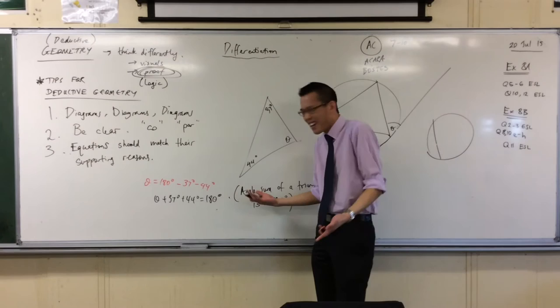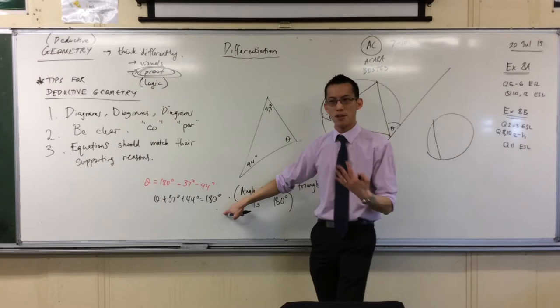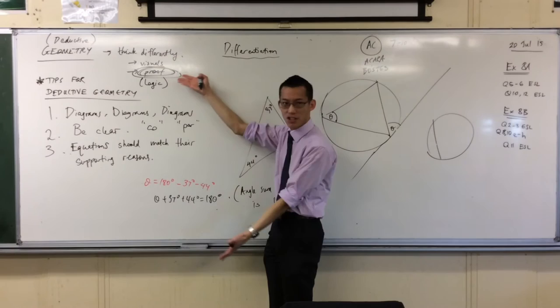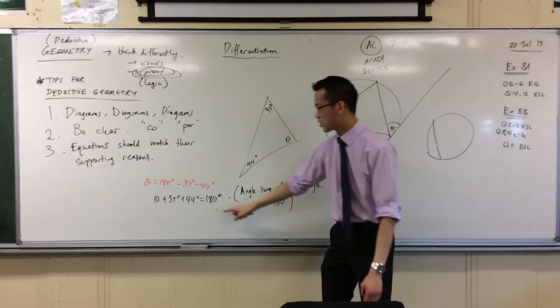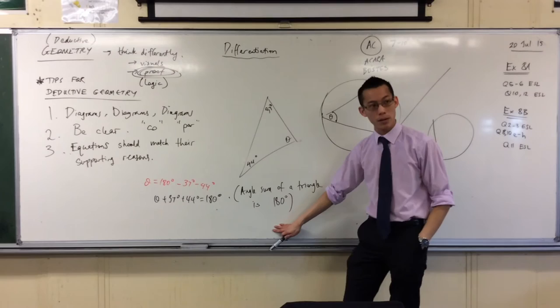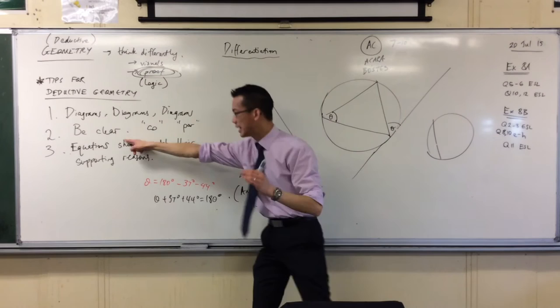Now you're probably not gonna lose a mark for saying this rather than this, but we're not in this just about getting you to memorize some rules so you can reproduce something correctly. I'm trying to get you to understand mathematics and how logic works. When you identify what reason you want, you need to construct this equation so it carefully matches, so that it is clear what you are proving and how. Does that make sense?